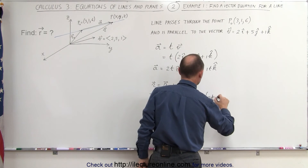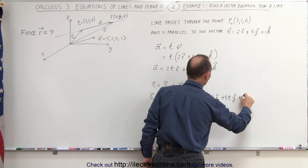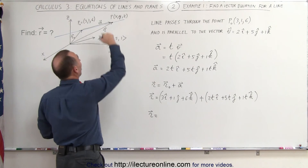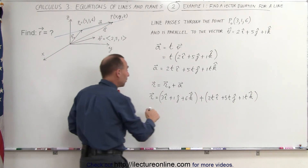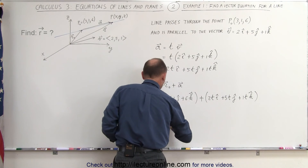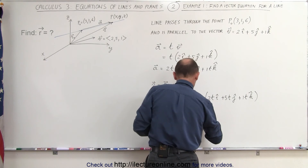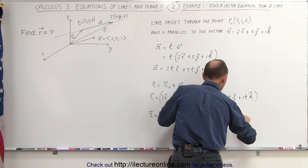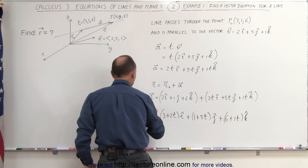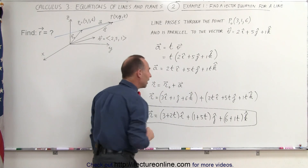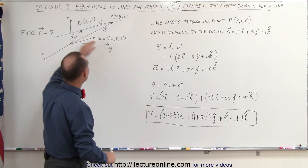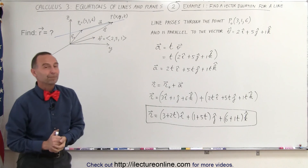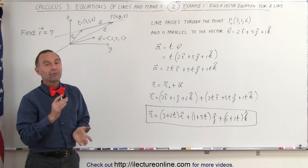We can write this as 2t in the i direction, plus 5t in the j direction, plus 1t in the k direction. If we now add those two vectors together, then we can say that the r vector — the vector that points to an arbitrary point on the line, any point x, y, z — can be written as (3 + 2t) in the i direction, plus (1 + 5t) in the j direction, plus (6 + 1t) in the k direction. This is how we express a line in space using vector notation with parameter t, which relates the direction of the line to the known vector, knowing the line is parallel to that vector and at least one point on the line.